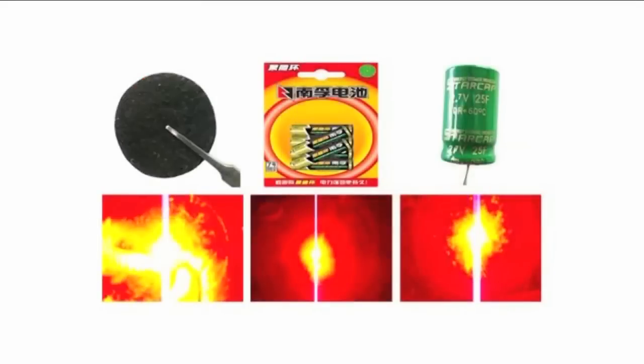As can be seen, all capacitors can deliver the high current pulse required for the flash light, and the brightness exceeds that powered by two AAA batteries or one 25F commercial supercapacitor.